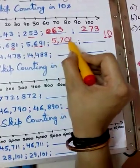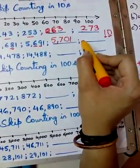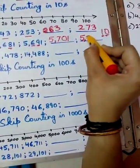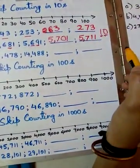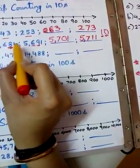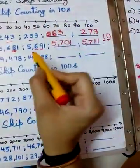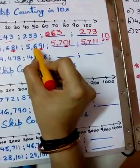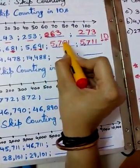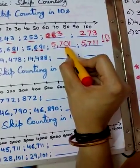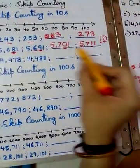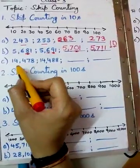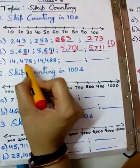After 5,701, if you add 10, what number comes? 5,711. Only the tens place changes. The digit goes 8, 9, 10 — we cannot write 10, so we put 0 and add 1 to the hundreds place: 6 plus 1 is 7. So from 5,701 we get 5,711. After 0 comes 1 in the tens place, so the next number is 5,711.